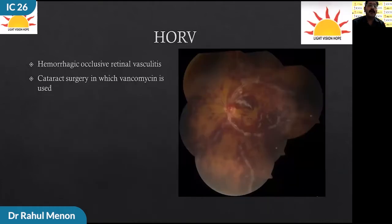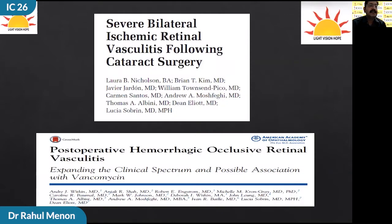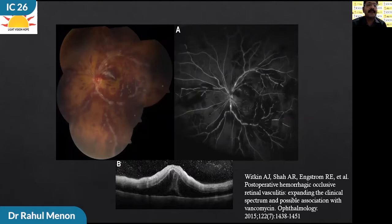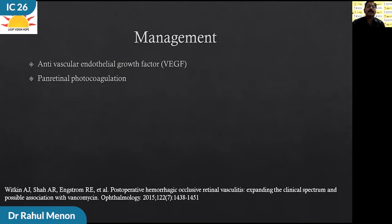Next is HORV, or hemorrhagic occlusive retinal vasculitis. It tends to occur in patients post-cataract surgery where vancomycin has been used intracamerally. Initially these patients have good post-operative visual acuity and present between 1 to 14 days after surgery with painless vision loss. On anterior segment, there is mild AC reaction. Fundus shows diffuse venular sheathing, flame-shaped retinal hemorrhages, and macular edema. FFA shows diffuse early staining with late leakage and blockage in areas of hemorrhage. OCT shows submacular detachment and hyperreflective inner layer suggestive of ischemia. They carry a very poor prognosis because of rapid development of NVI and neovascular glaucoma; treatment includes anti-VEGF and early PRP.